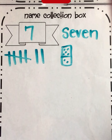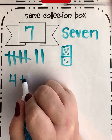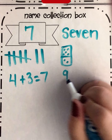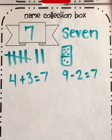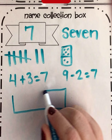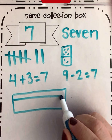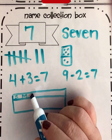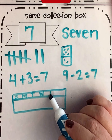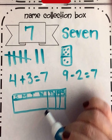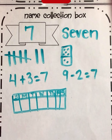I can do an addition equation: four plus three equals seven. I can do a subtraction equation: nine minus two equals seven. I'm going to get a little tricky here — I'm going to draw something. This is a calendar. I'm going to draw Sunday, Monday, Tuesday, Wednesday, Thursday, Friday, Saturday. And this little calendar can be used to represent the number seven because there are seven days in a week.